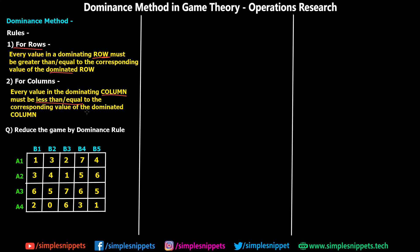Sometimes in certain numericals we do not get the saddle point using the maximin and minimax method and then we have a mixed game in that situation. We've seen that in the previous videos wherein we saw the difference between a mixed game and a pure strategy. But what this dominance rule basically does is it helps us to reduce the payoff matrix to a simplified version.